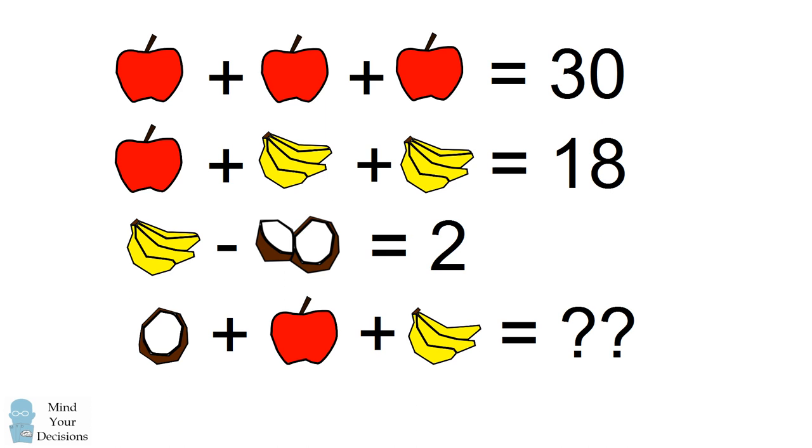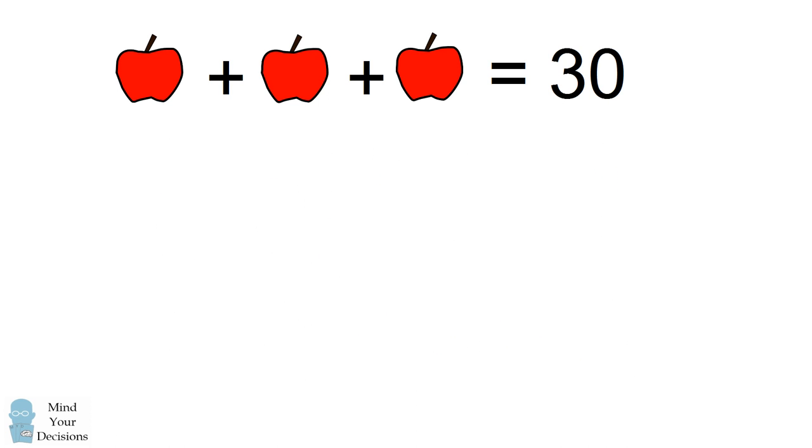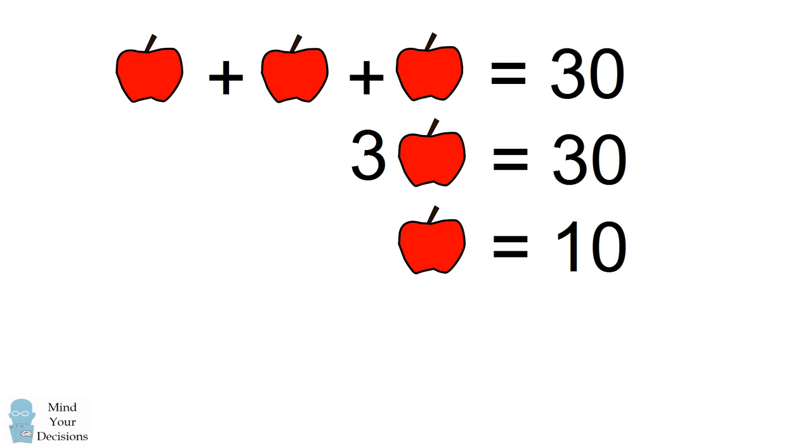So we can consider this as a math problem if you consider the apple, the banana, and the coconut as different variables, and they're having numerical values. We'll start out with the first equation, that 3 apples are equal to 30. If we divide both sides by 3, we get the result that 1 apple is equal to 10. This is generally an accepted part of the problem.